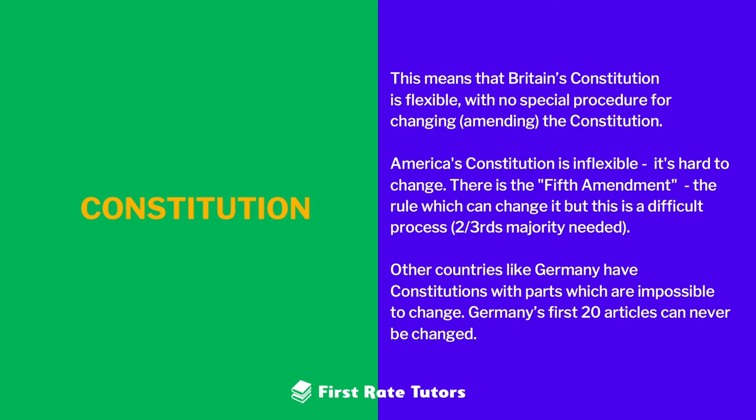When it comes to Britain, its constitution is quite flexible and there's no actual special procedure for changing or amending it. In contrast, the US constitution is quite inflexible — it's really hard to change. There's the Fifth Amendment rule which can change it, but this is a difficult process; a two-thirds majority is needed. There are also other countries like Germany which have constitutions with parts impossible to change legally — Germany's first 20 articles can never be changed. So in contrast to Germany and the USA, the British constitution is fairly flexible.